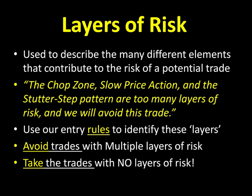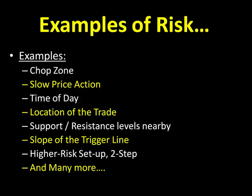We look to avoid trades that have multiple layers of risk, such as if we're trading in the chop zone — the center of a sideways bracket — or on slow price action, when we don't have the waterfall effect or the follow-through on the tape. The time of day can be a layer of risk — maybe it's the wrong time of day to be trading, right before or right after the news. The location of the trade can be a bad thing if we're trading around a big round number, or towards the high or low of the day, or around value area extremes. It can also be the location of the trade and whether or not we have support and resistance levels nearby — taking a long trade into overhead resistance is another layer of risk.